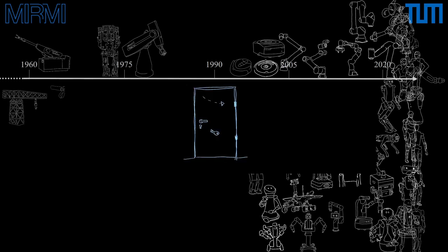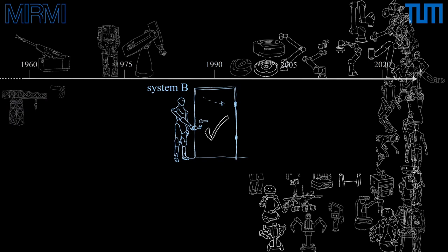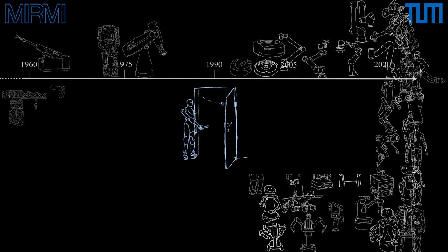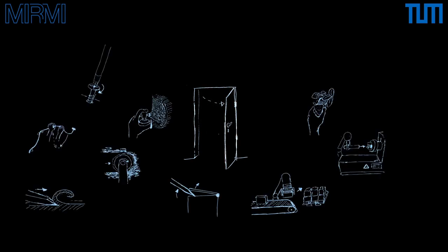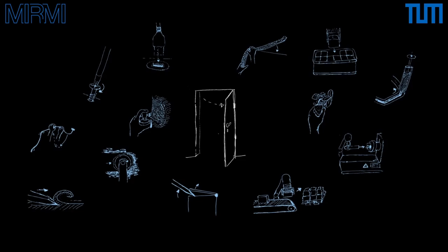Let's look at a door-opening problem as a simple example. The morphology and capability of system A may not be sufficient to complete this task, while system B may solve the task at ease. This simple example transfers to any imaginable task — so how can we find the technologies successfully fulfilling a given task?